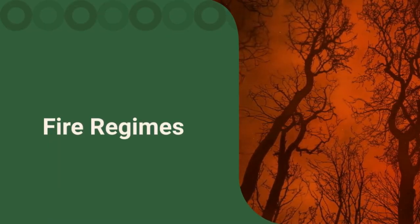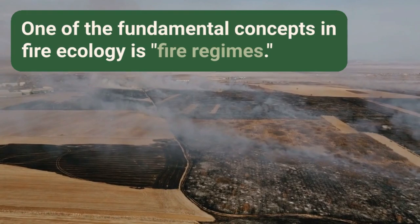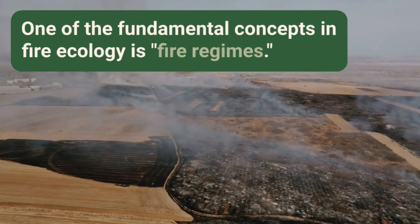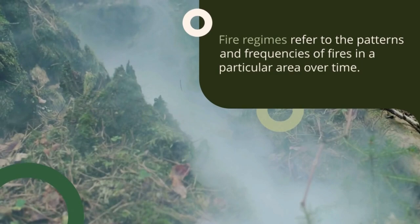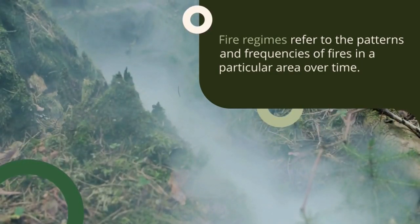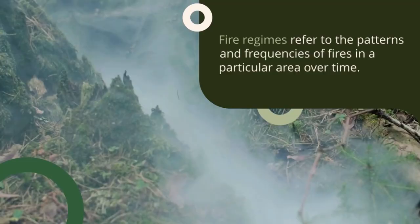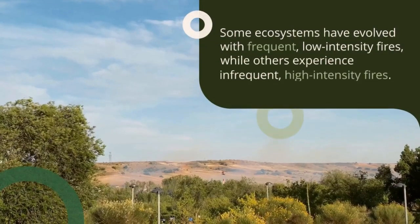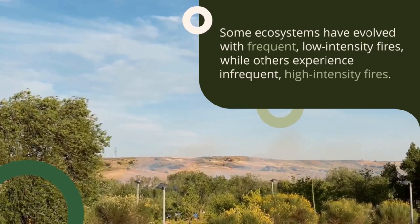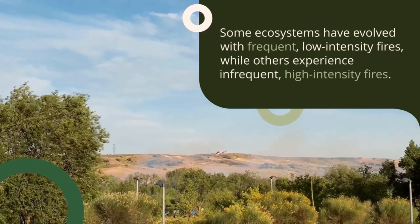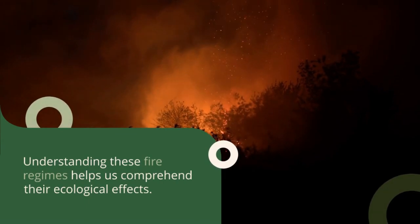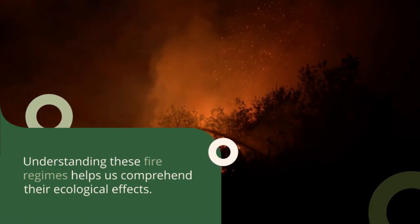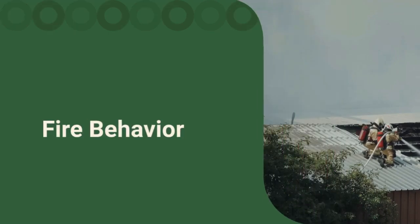One of the fundamental concepts of fire ecology is fire regimes. Fire regimes refer to the pattern and frequency of fire in a particular area over time. They are influenced by various factors including climate, vegetation type, and human activities. Some ecosystems have evolved with frequent low-intensity fires while others experience infrequent high-intensity fires. Understanding these fire regimes helps us comprehend their ecological effects.